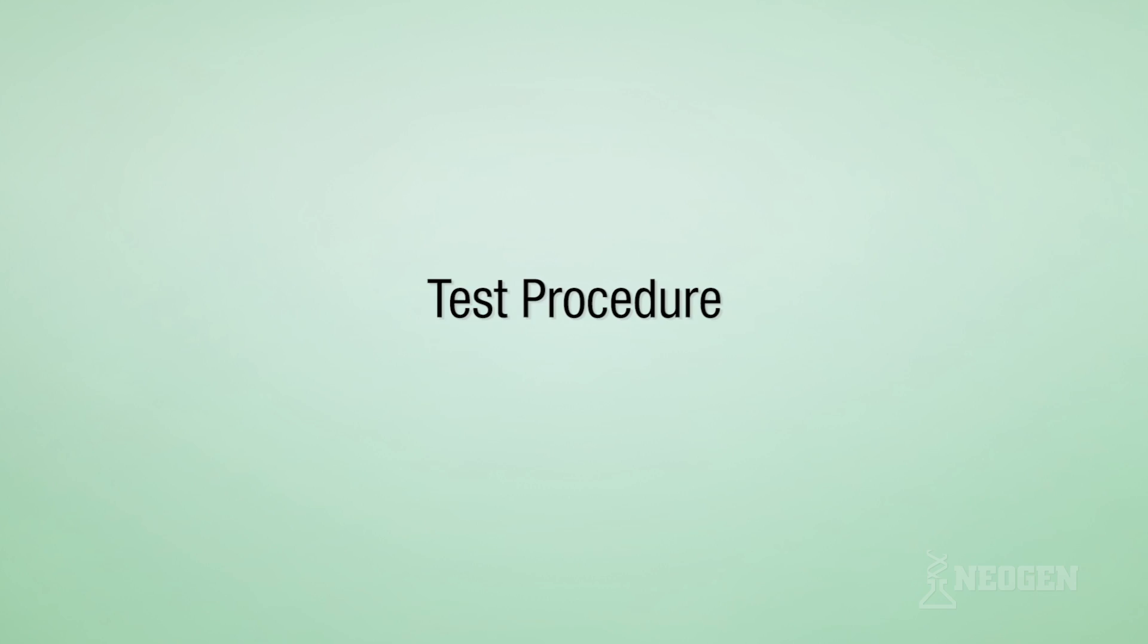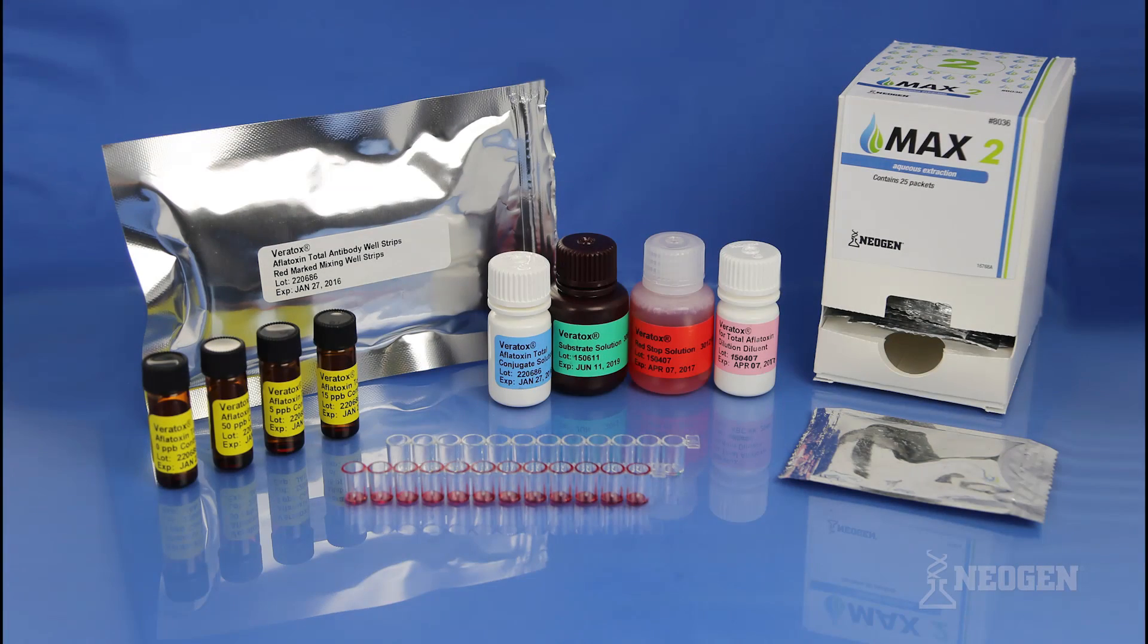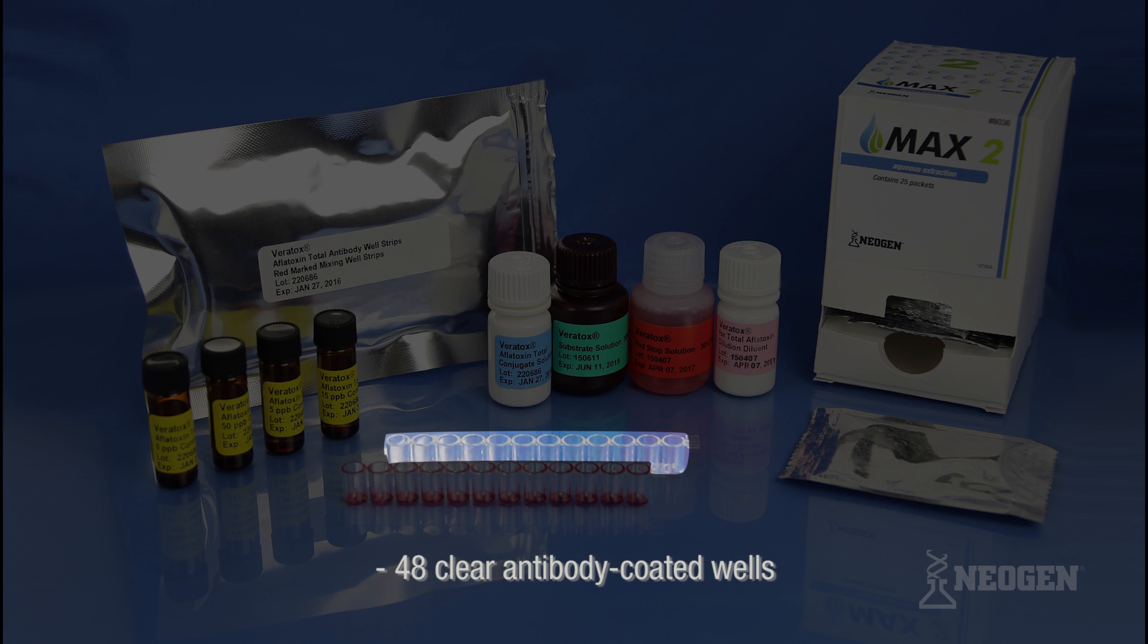Test procedure. Each Veritox for total aflatoxin kit contains 48 red marked mixing wells, 48 clear antibody coated wells.